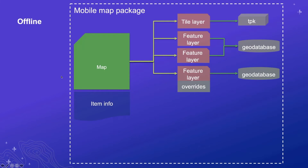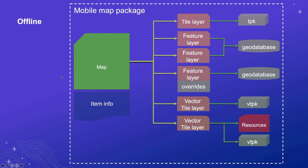Only this time, the data sources are not services. They're going to be local files on the device — a TPK or tile package, a runtime geodatabase that essentially contains a snapshot of data from a feature service. Overrides are handled as well. Vector tile layers with style resources can also be taken offline as BTPKs.